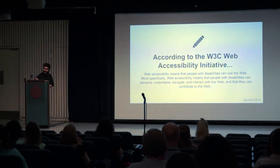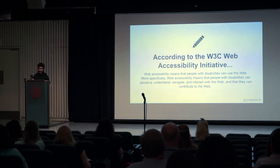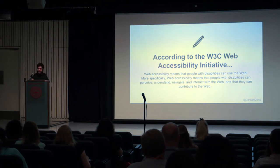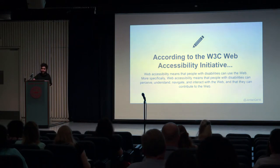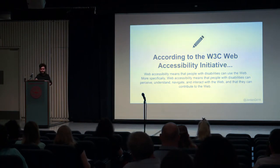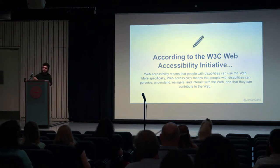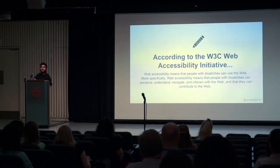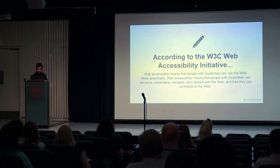According to the W3C Web Accessibility Initiative — W3C being the World Wide Web Consortium — web accessibility means that people with disabilities can use the web. More specifically, web accessibility means that people with disabilities can perceive, understand, navigate, and interact with the web. Those four key points are the real meat and potatoes of accessibility: perceive, understand, navigate, and interact. And that they can contribute to the web. So we're not just focusing on making the web more accessible, but we also want to make web tools more accessible, like WordPress.